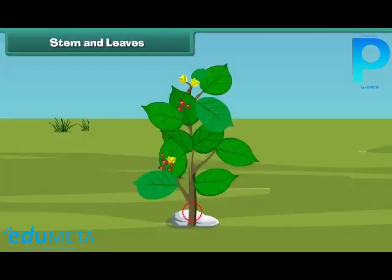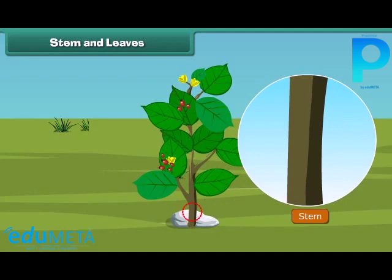The next part of a plant is the stem. A stem is the hard part of a plant which grows above the ground. It bears leaves, fruits, and flowers. A stem also supports the plant.